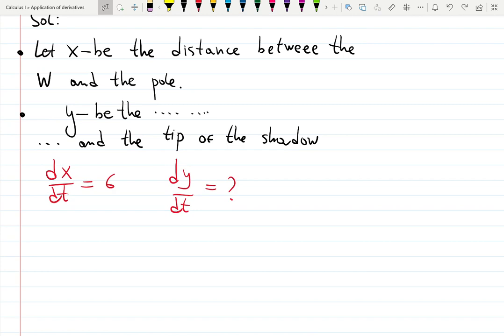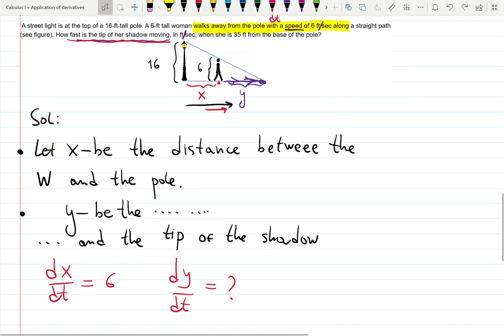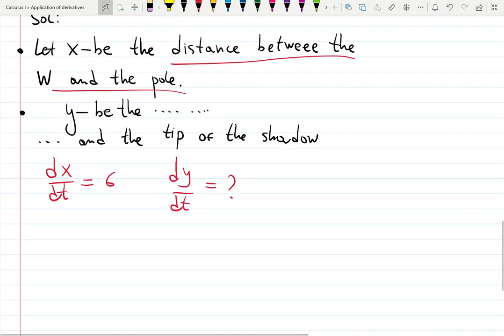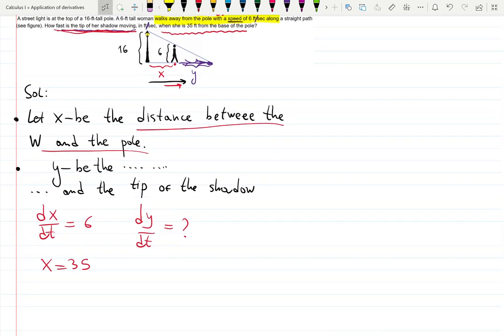Now I need to build equation for those variables. But also let's write down what else do we have. 16 is there and 6, those are heights. What is 35? 35 is the moment at which I want to check how fast the tip of the shadow is moving, and she is 35 feet away from the pole. That means x, my x, is a distance between the woman and the pole, so I also have x equals 35. And we don't plug it right away since we don't have any other equations here.